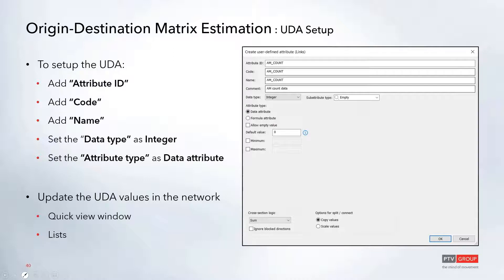Once the UDA has been created and added to the network, you'll need to go into the network and update those UDA values. You can do that by clicking on the links and updating the value in the quick view window on the lower left, or by adding that list for your links or turns and entering values there. You can also add values through the junction editor if you're adding turn data.